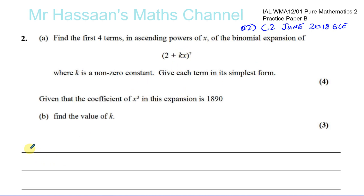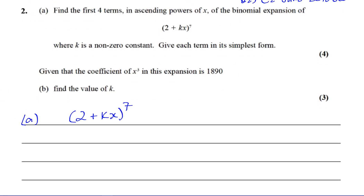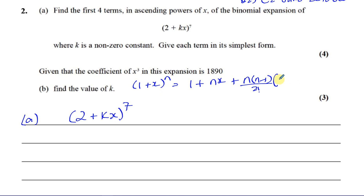For part A we need to expand (2 + kx) to the power of seven. There are different ways of doing this — I prefer to use the formula where (1 + x)^n equals 1 + nx + n(n−1)/2! × x² + n(n−1)(n−2)/3! × x³. But it has to have a one here — it can't have a two like this expression does.